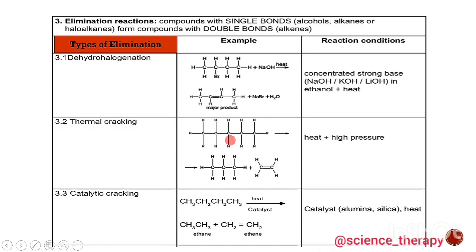The second type of elimination is thermal cracking, which takes long chains of alkanes and turns them into short chains of alkanes plus an alkene. The reaction conditions needed are heat and high pressure.